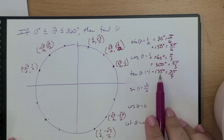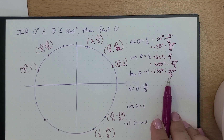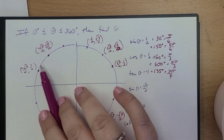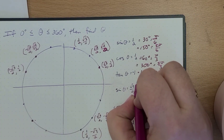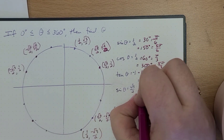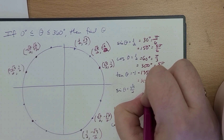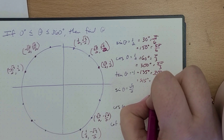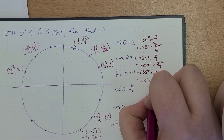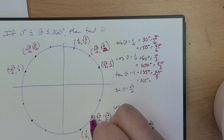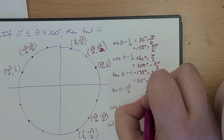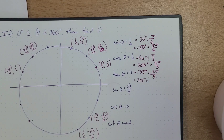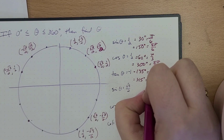So this was 135 degrees, equal to 3π/4. And then this is also equal to 315 degrees, which is the equivalent of 7π/4.